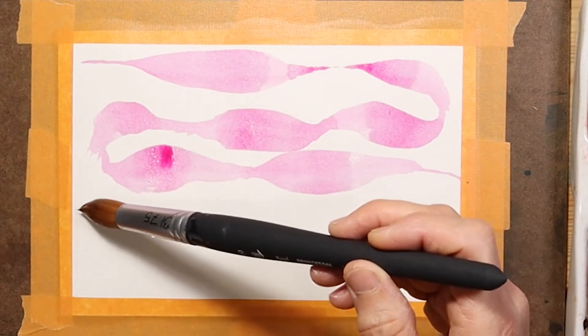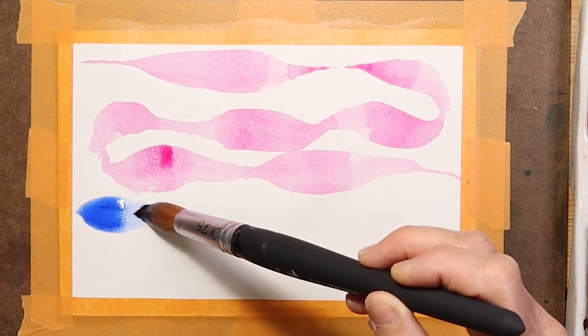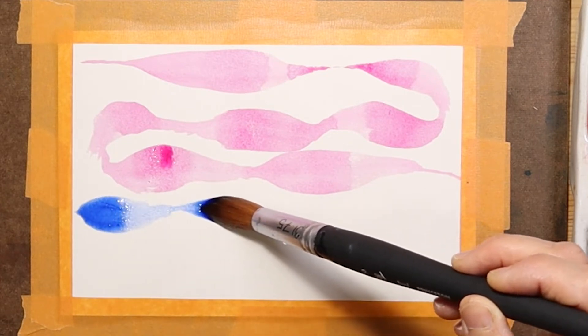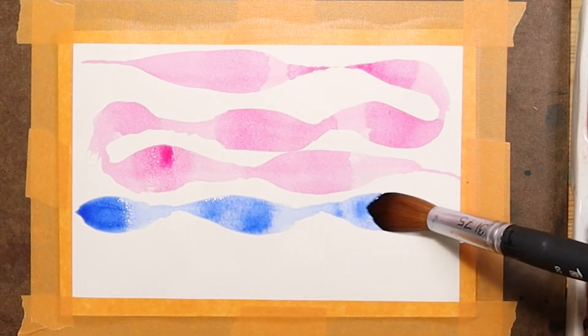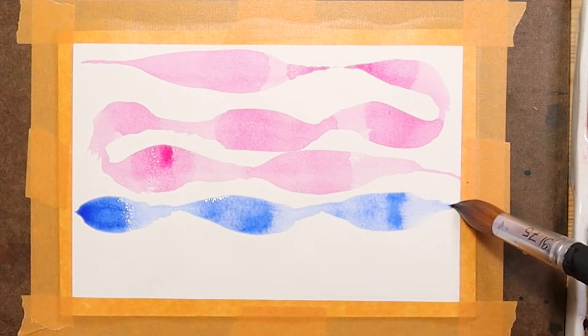Now with the French ultramarine, same technique, we can again just see fine lines as well as really broad strokes, lots of water in the body of the brush.